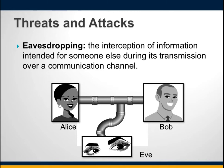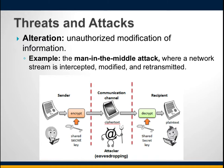Alteration is another threat: if a message is being communicated through a channel, the attacker should not be able to alter that message. The eavesdropper should not be able to change the message in transit. A possible solution is to send encrypted information, which we will discuss in detail.